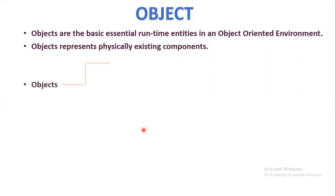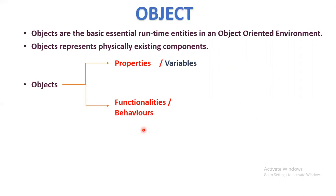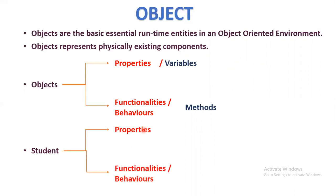Every object has properties and functionalities or behaviors. Properties are nothing but variables, and by using variables we can provide data which can be operated by certain methods. For example, if you take a student as an object, the properties are student number, student name, student CGPA, email ID, phone number, and so on.